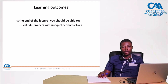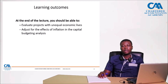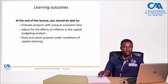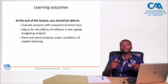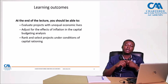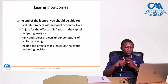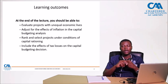At the end of this lecture, we will be able to evaluate projects with unequal lives. We will also be able to adjust for the size of investment in Capital Budgeting analysis. Then we are also going to discuss how to rank projects under other conditions of Capital Budgeting decisions. Some of these issues are not necessarily addressed by the methods discussed in the previous lecture session — that is the NPV, the IRR, modified rate of return, and so on. We are also going to discuss the inclusion of tax effects, especially tax losses, in the Capital Budgeting decision.